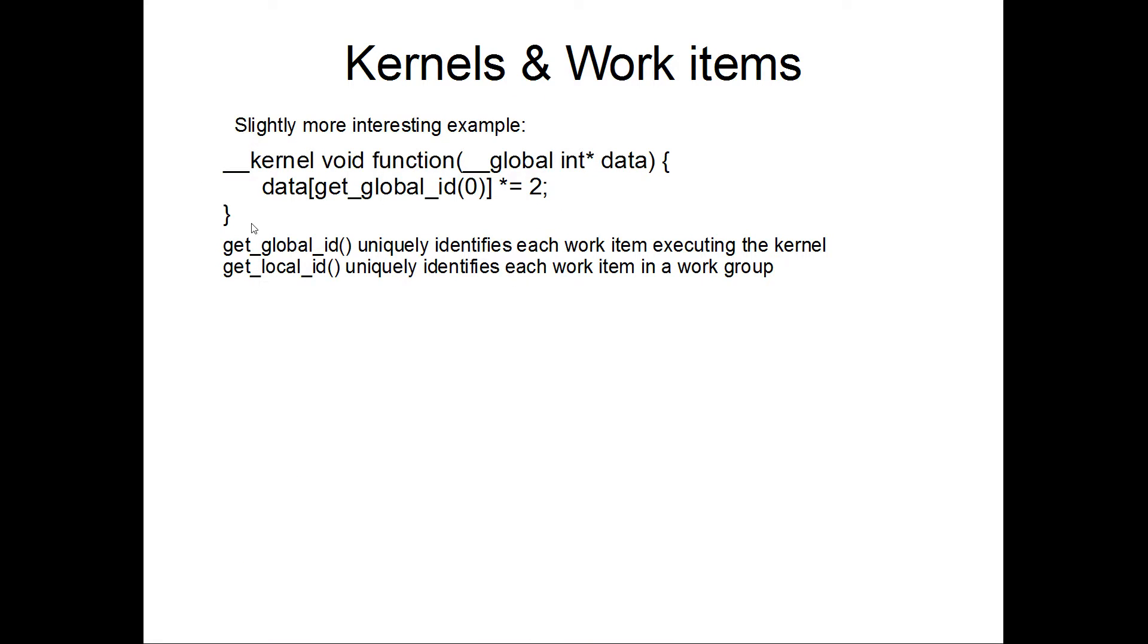So here's a more interesting example. It's taking this data array as an argument. It's calling getGlobalId 0 on it. GetGlobalId is a unique identifier for each work item executing a kernel.